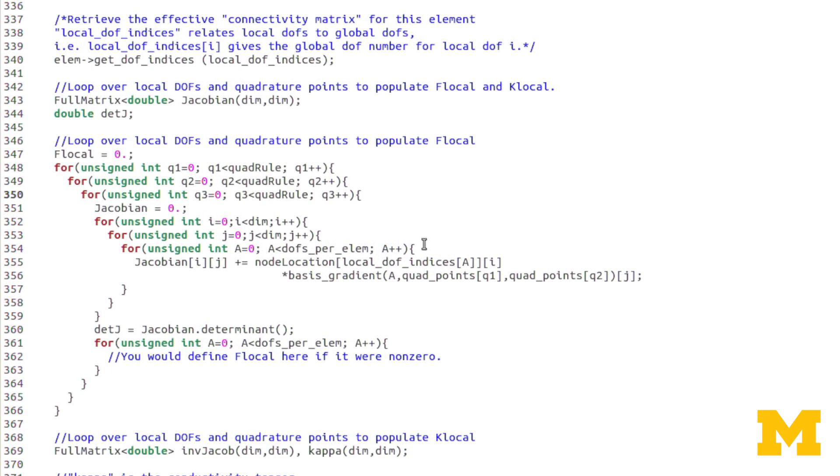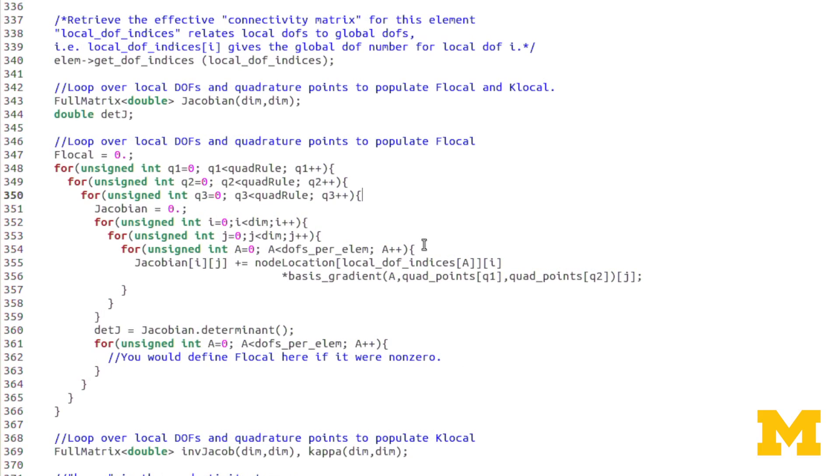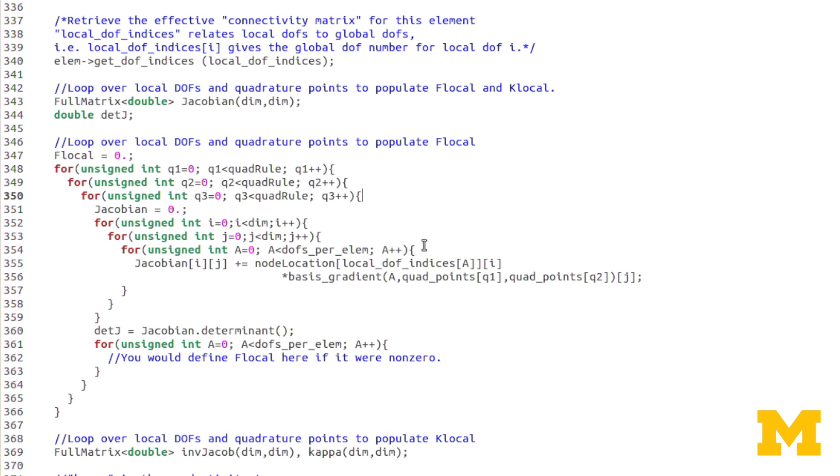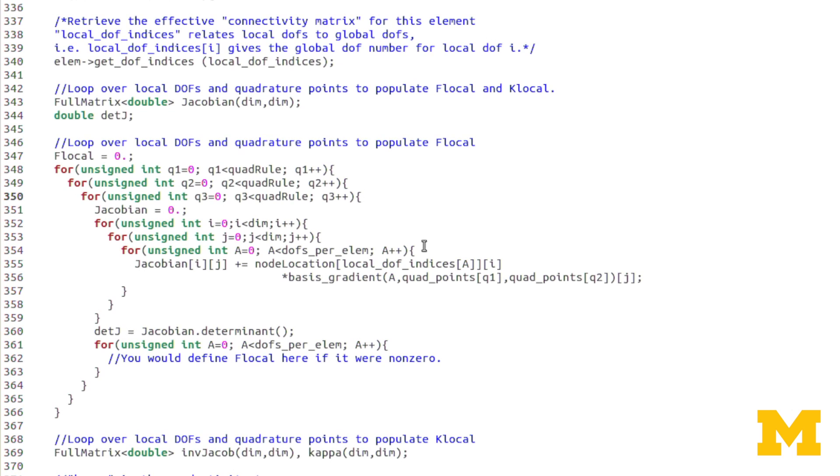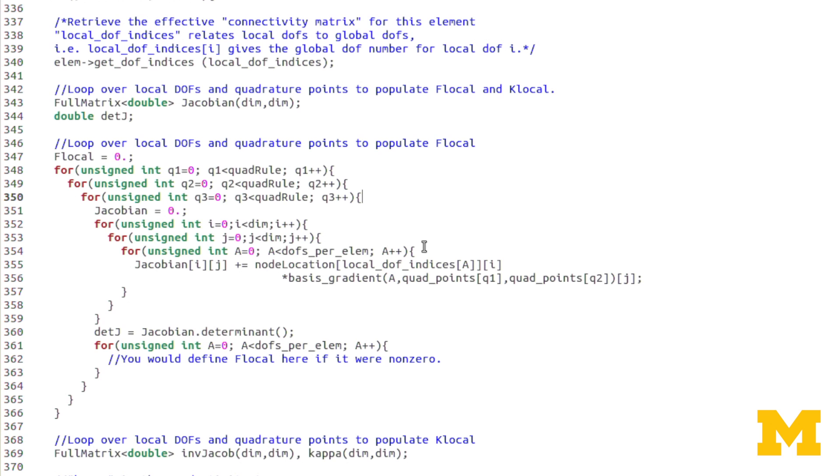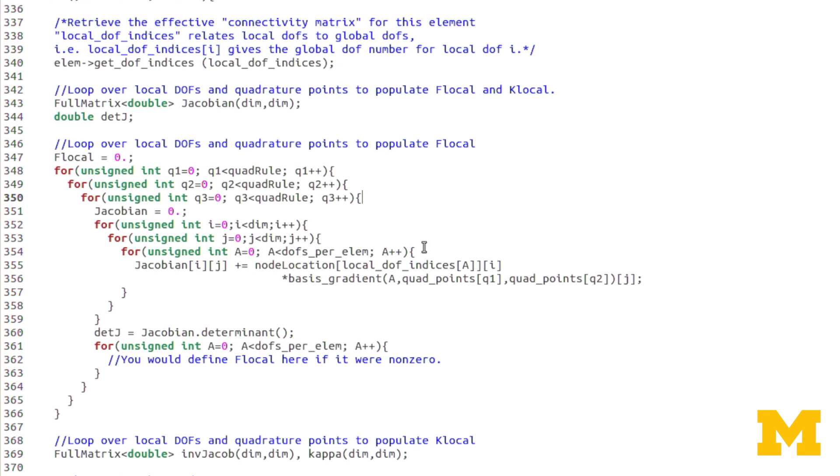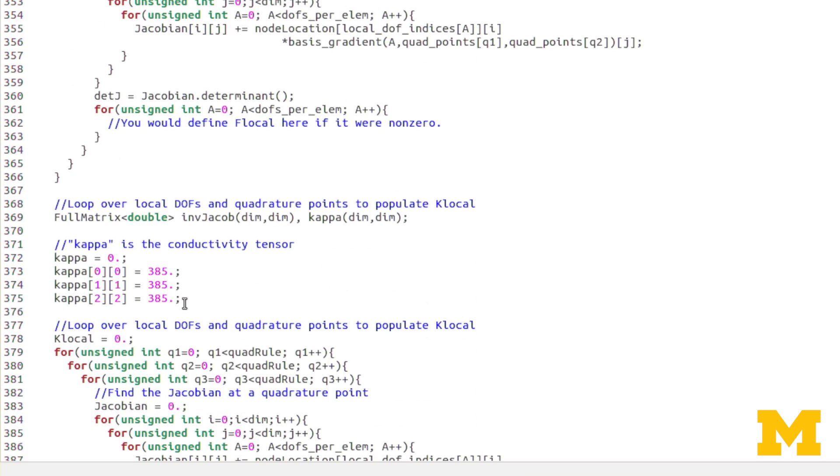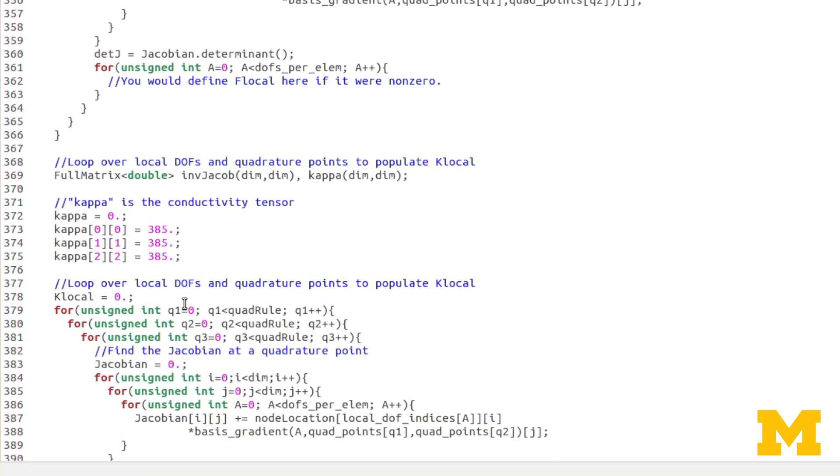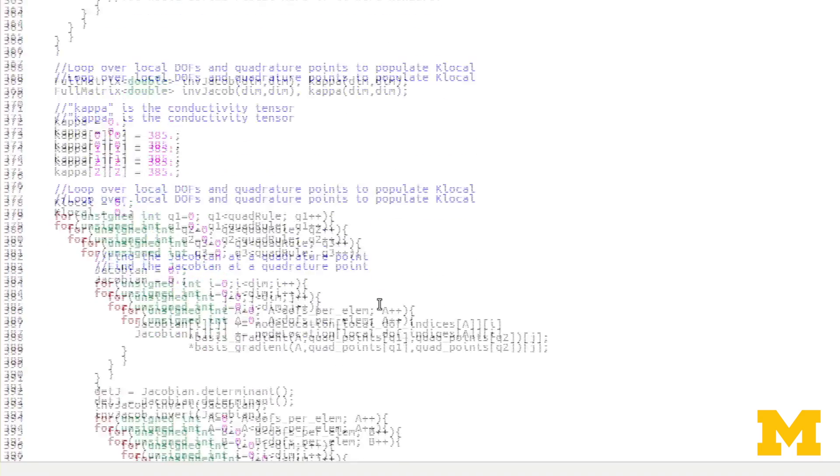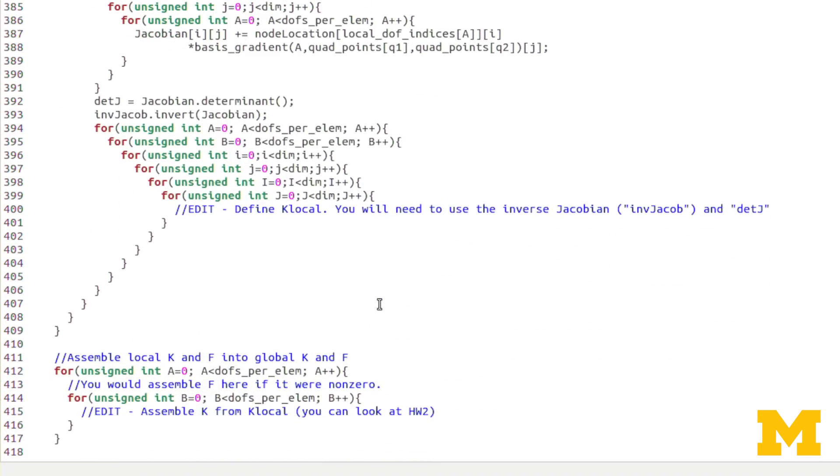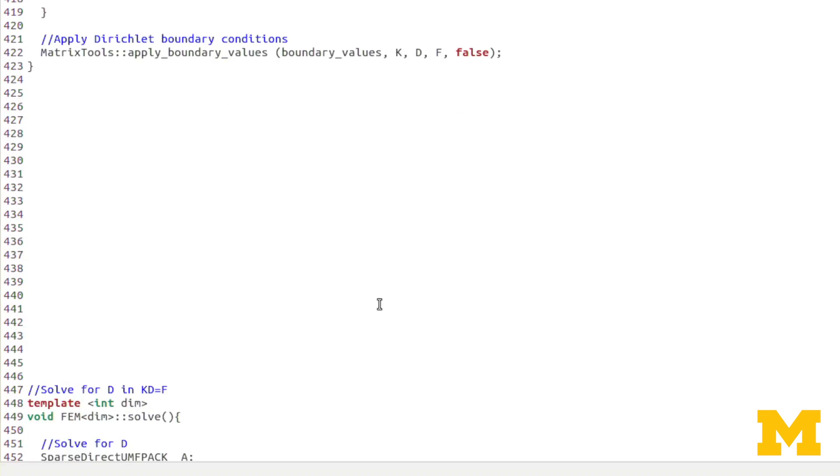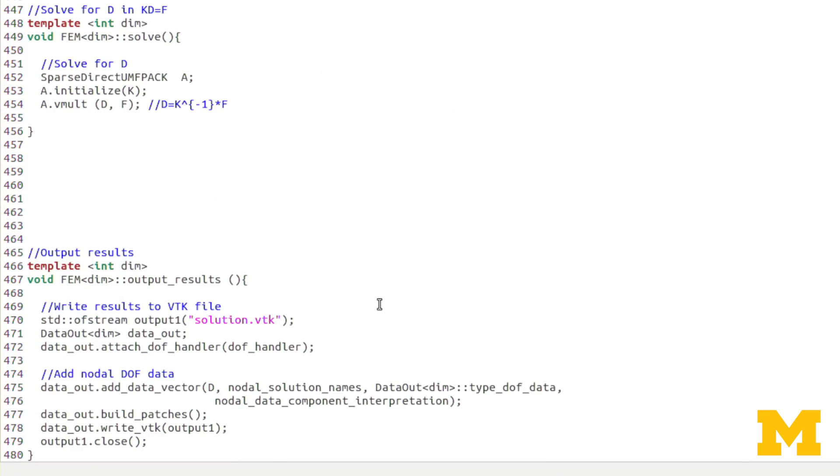Now, remember, since we are dealing with, in the 2D problem, two quadrature points, in the 3D problem, three quadrature points. We also need to multiply by their, respectively, two quadrature weights or three quadrature weights, depending on the dimension, when you're doing your numerical integration. Kappa, I've also updated to be a 3D, or a 3 by 3 tensor, which we'll use in creating K-local. However, other than that, everything else is the same.